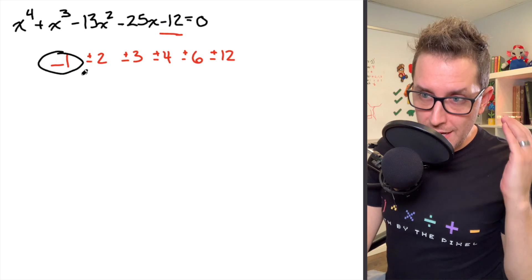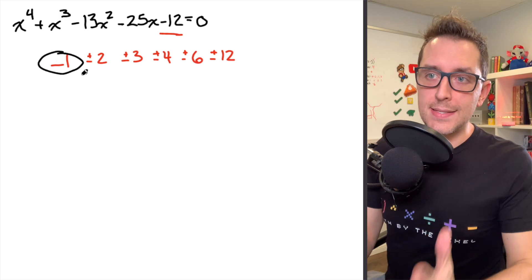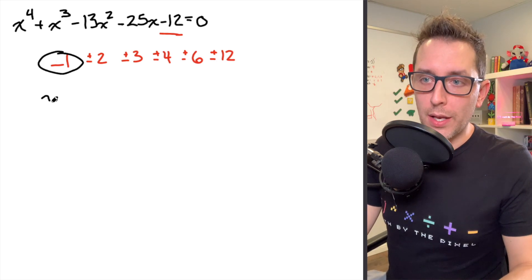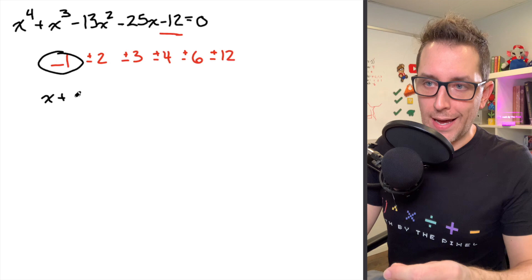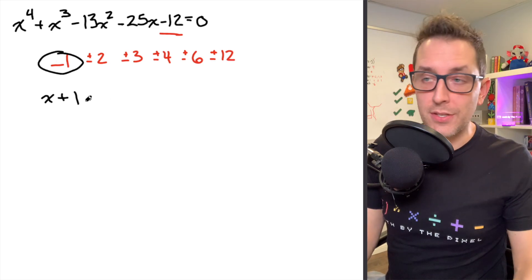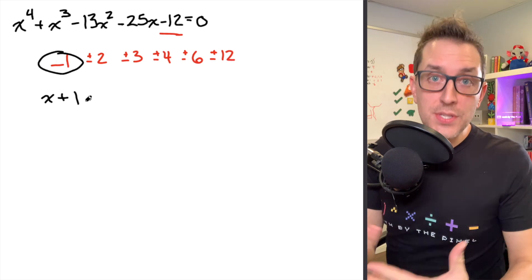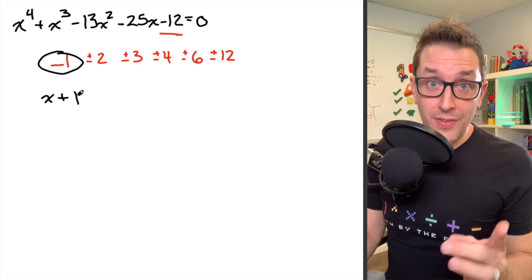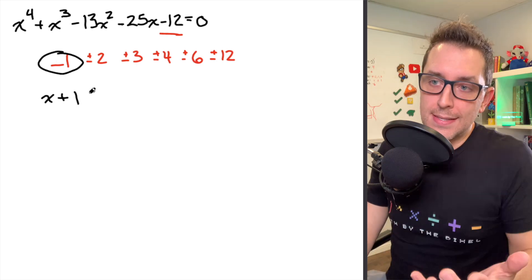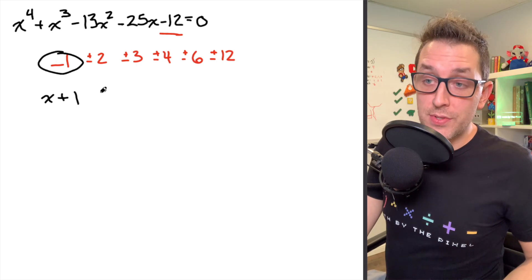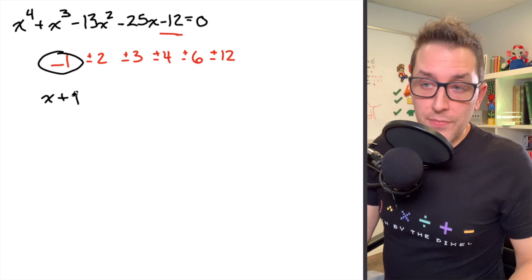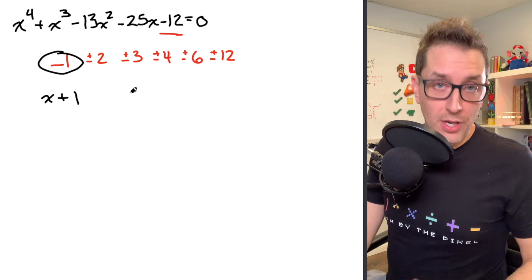The factor theorem says that if negative 1 makes this polynomial equal to 0, then x plus 1 must be a factor. So I'm going to write x plus 1 as my first factor — that's going to help me solve this polynomial equation. Since x plus 1 is a factor, I can use this to perform some synthetic division to factor this polynomial equation.